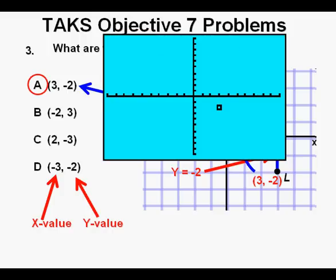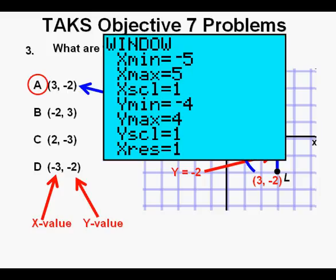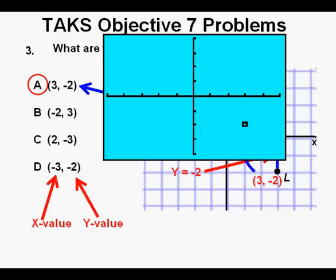We can even evaluate the point better if we go to our window settings and set the x min at negative 5, the x max at 5, the y min at negative 4, and the y max at 4. These settings match the graph given in the problem. And when we press GRAPH, we see even better that our answer is A.